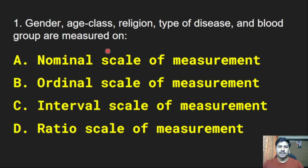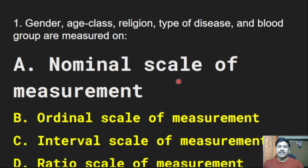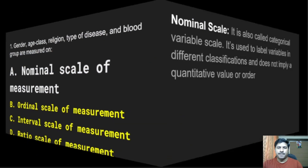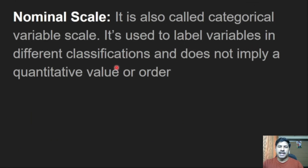Correct answer: nominal scale of measurement. Gender, age, class, religion, type of disease and blood groups are measured on nominal scale of measurement. Nominal scale is also called categorical variable scale. It is used to label variables in different classifications and does not imply a quantitative value or order.